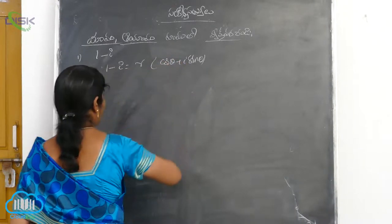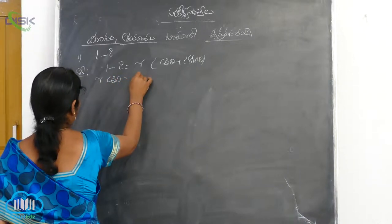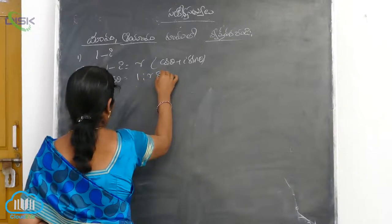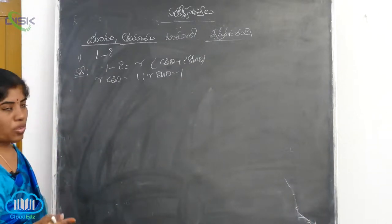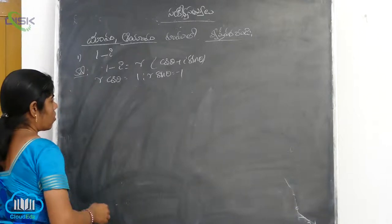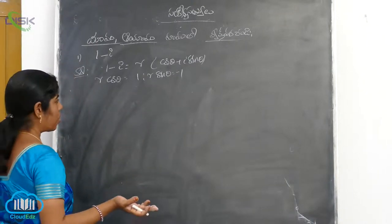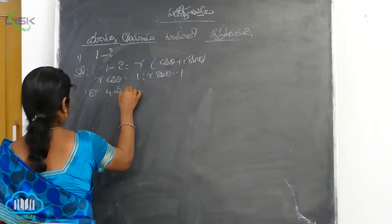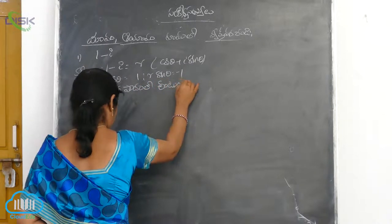Let's do the comparison. For comparison, r into cos theta equals 1 and r into sin theta is equal to minus 1. That means cos theta equals 1 and sin theta equals minus 1, so theta is in the 4th quadrant.